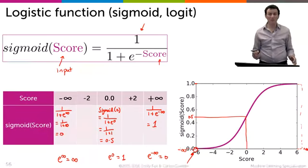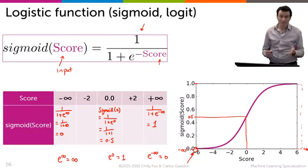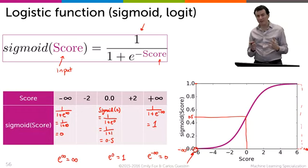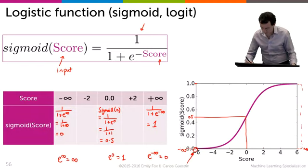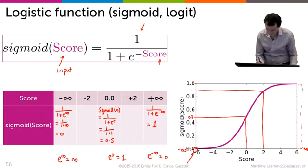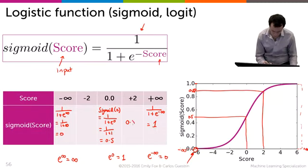So the sigmoid has this property that it goes from 0 to 0.5 to 1 really in the way we want. Now what really is important here is the places in between. So for example, if the score is 2, we will see that we hit that 0.88 over here.